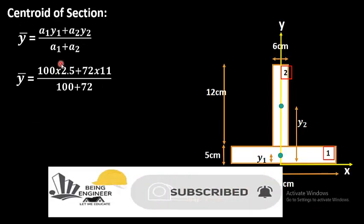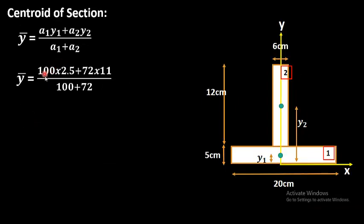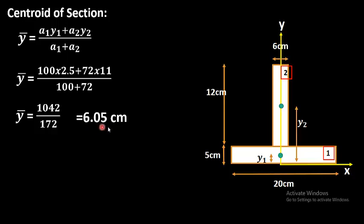By putting the values — A1 (area of the first region) multiplied by y1 (2.5 cm), plus A2 (area of the second region) multiplied by y2, all divided by the sum of the areas — we get the y-bar value, which comes out to be 6.05 cm. This is the combined centroid of both regions, defined as y-bar.